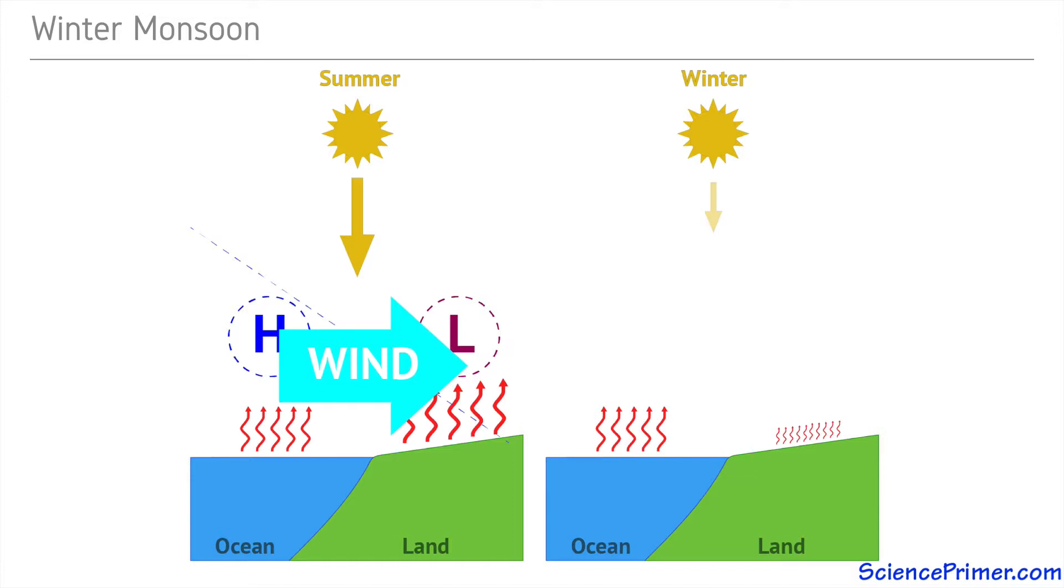With air temperatures now higher over the water, the high and low pressure systems flip, as does the pressure gradient and the prevailing wind direction. Along with the change in wind direction, the two parts of the monsoon cycle are associated with different types of weather.